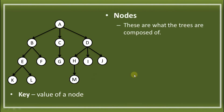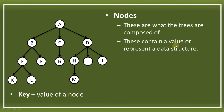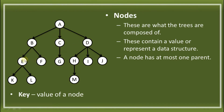What is a node? Nodes are what the TREEs are composed of. They contain values that represent a data structure. A node has at most one parent. The nodes here are the circles that contain a KEY. Just like B — its parent is A.